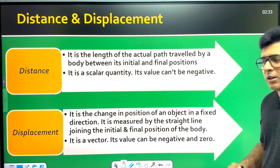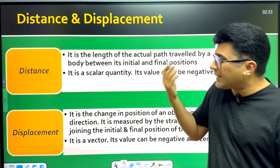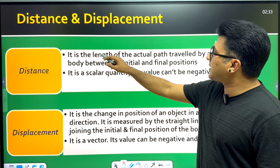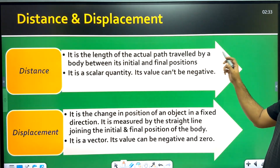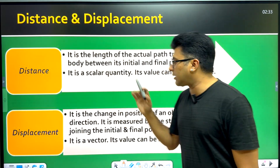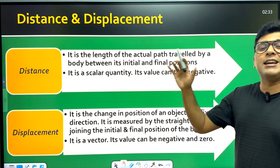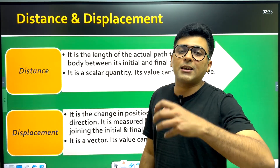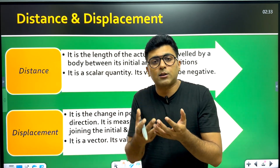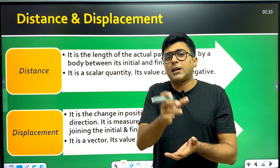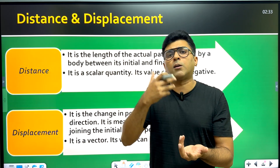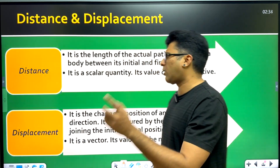So what is distance and displacement? Distance is the length of the actual path travelled by a body between its initial and final position. Distance is a scalar quantity; it is always zero or positive. If the object is stationary, the distance is zero. Distance can never be negative.